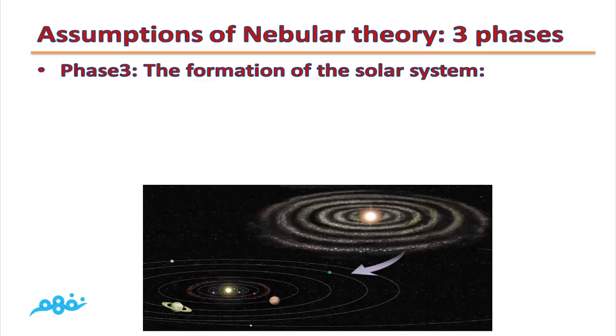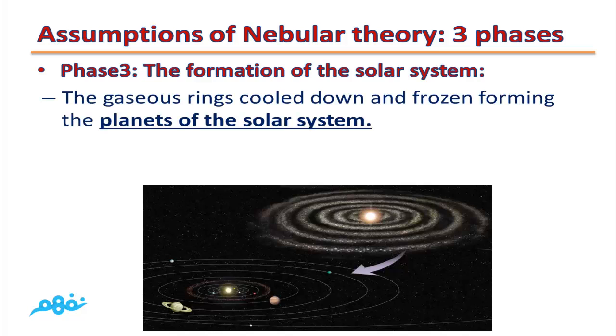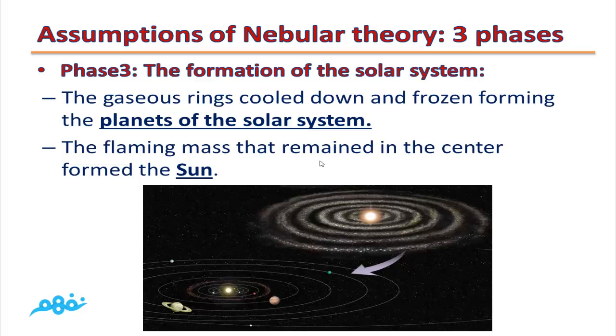Phase number three, the formation of the solar system. The gaseous rings cooled down and frozen, forming the planets of the solar system. The flaming mass that remained in the center formed the sun. So the gaseous rings formed planets and the glowing sphere formed the sun.